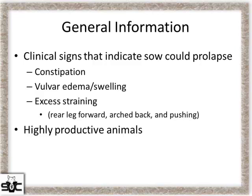That's not to say those signs appear every time — you can still come in and find one that prolapsed with no warning. But it's not always the case. We do see it more in highly productive animals — ones with 18 total born, all big pigs — that's your typical profile.